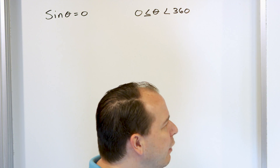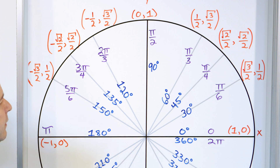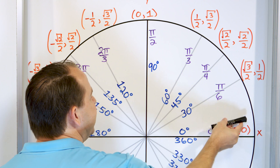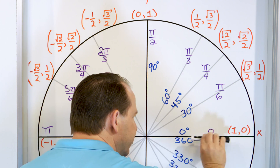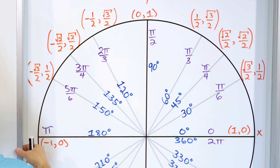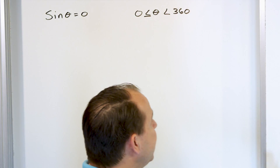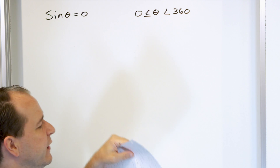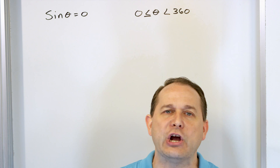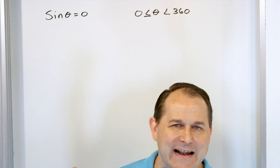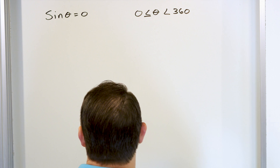What it's basically telling you is solve that equation, but the angles you write down as your answer can be anywhere from zero all the way around to 360, but not including 360 because then you'd be back right on top of where you started. So we have to provide all of the angles that satisfy that equation in this range.